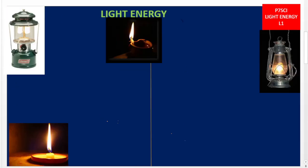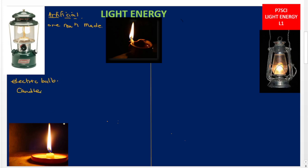Now let us move on to the artificial sources of light. Artificial sources of light are man-made — they are made by people. Examples include electric bulbs, candles, and the gas lamp. A candle, as you can see, produces heat and light energy as it burns.